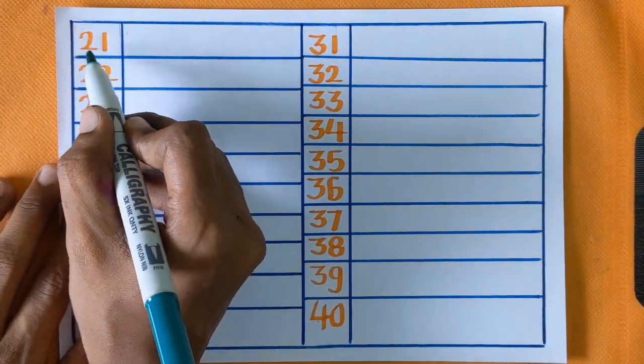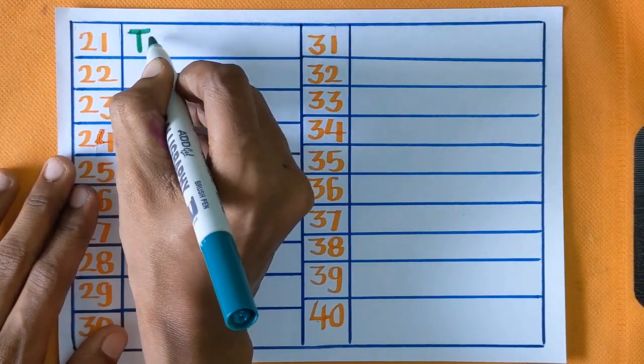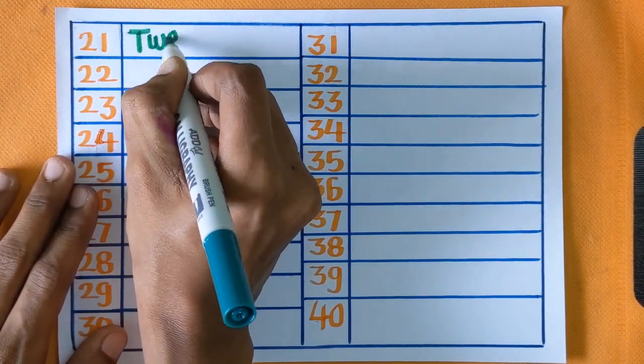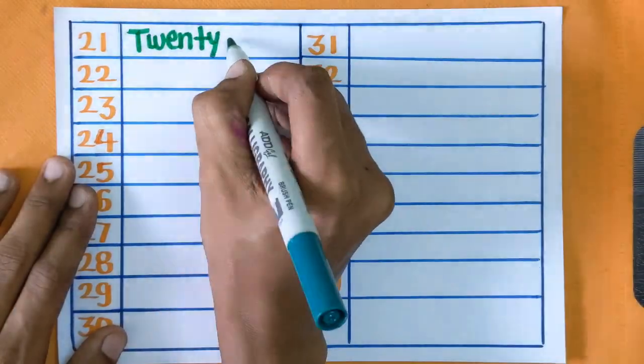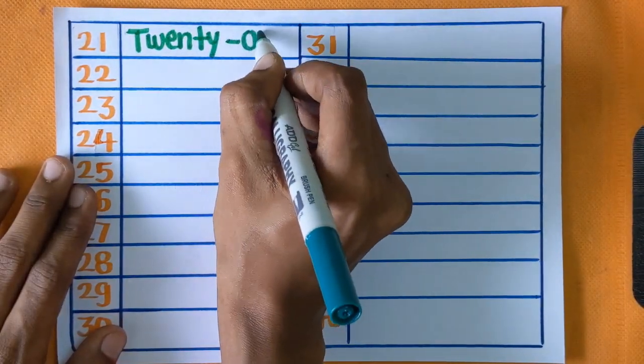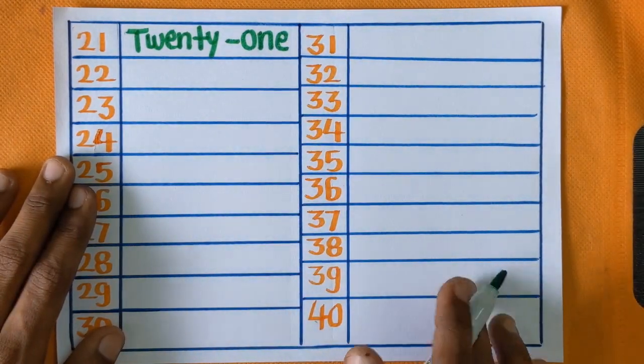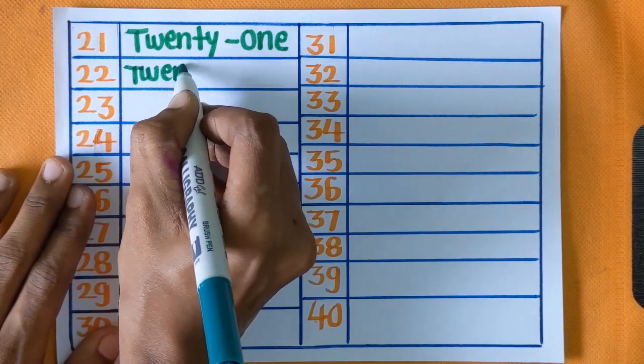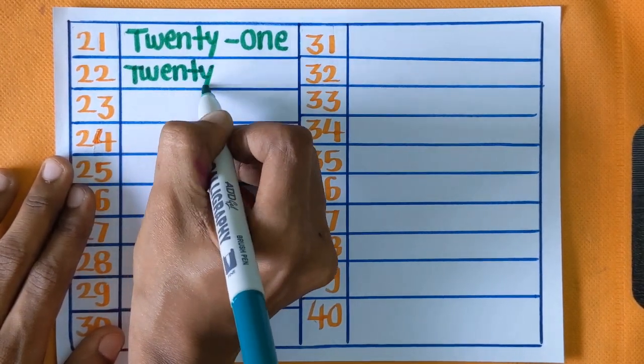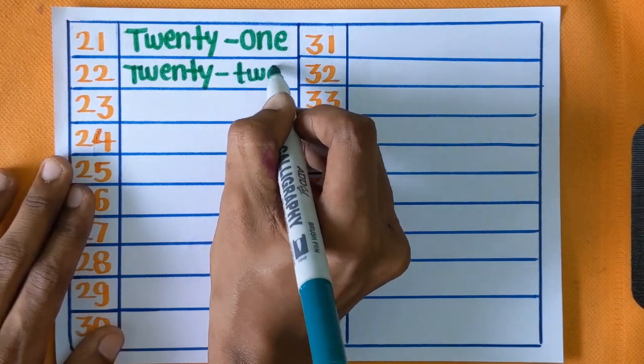Number twenty-one: T-W-E-N-T-Y, twenty, O-N-E, twenty-one. Next is number twenty-two: T-W-E-N-T-Y, twenty, T-W-O, twenty-two.